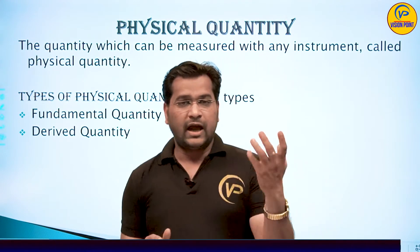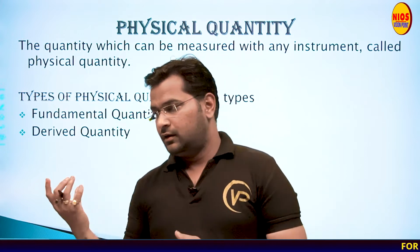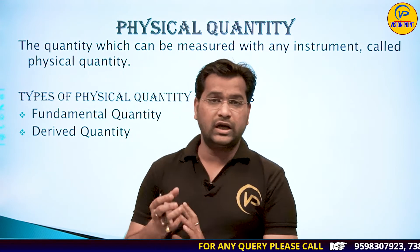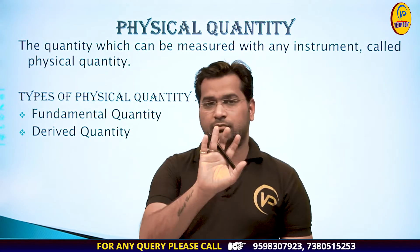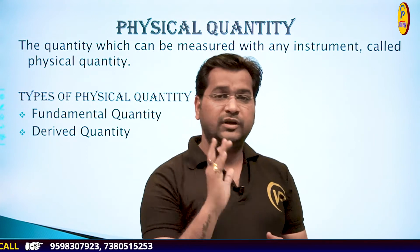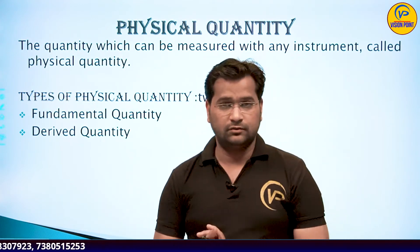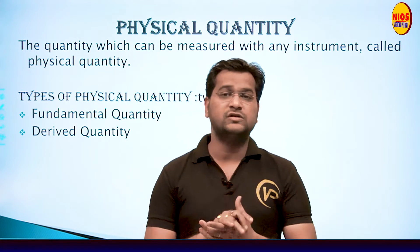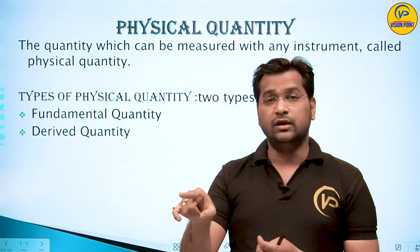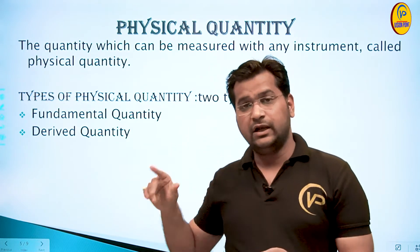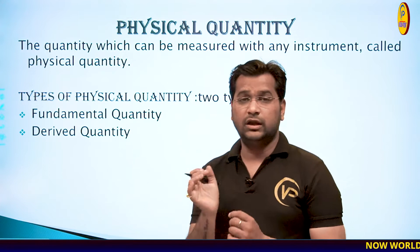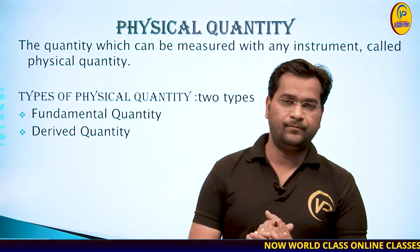Length, time, mass, weight, heat, energy — anything that can be measured is a physical quantity. But emotion, happiness — can you say someone has half a kilogram of happiness? No. You can say someone is very happy or sad, but you cannot quantify it precisely. जो quantity measure होगी वो physical quantity है। Happiness, emotion — quantities that cannot be measured are not dealt with in physics.